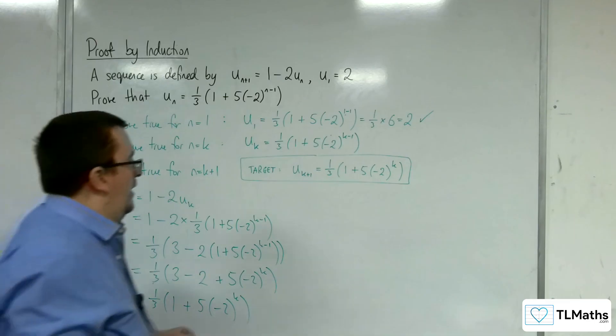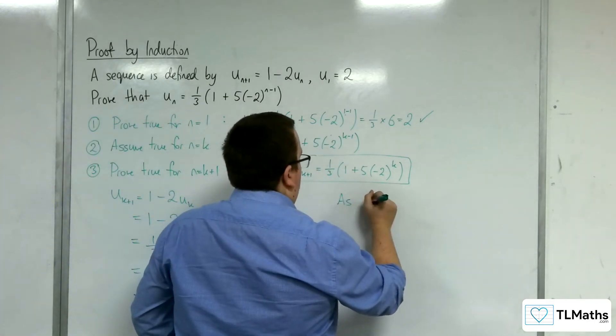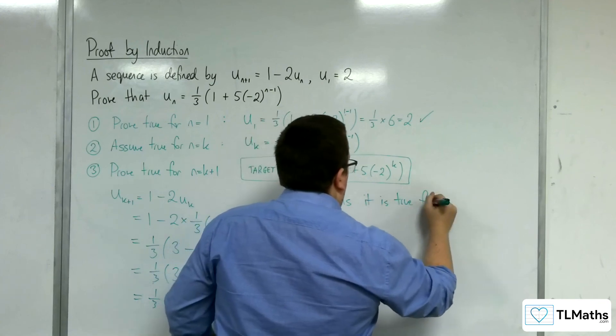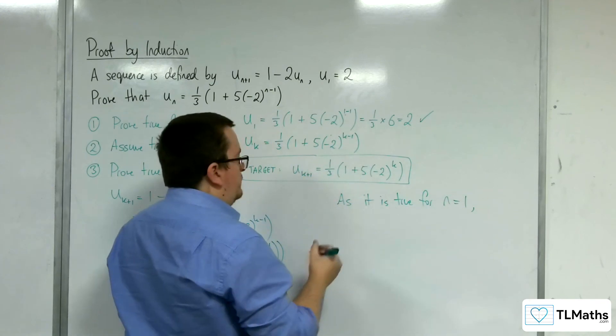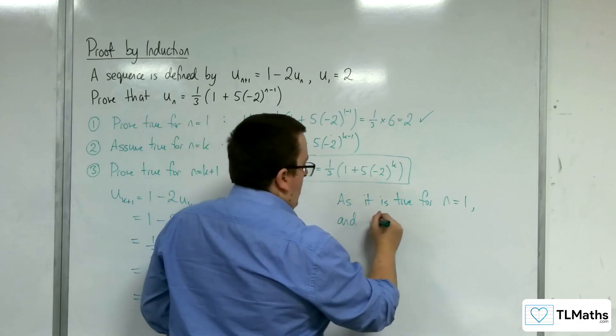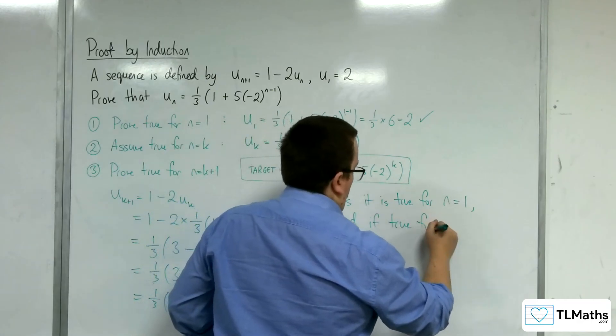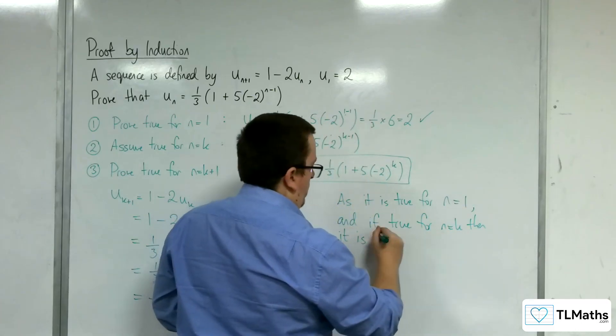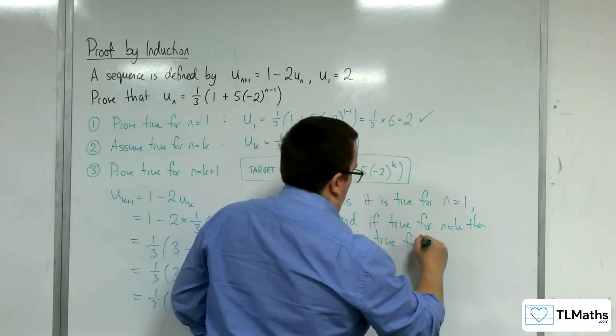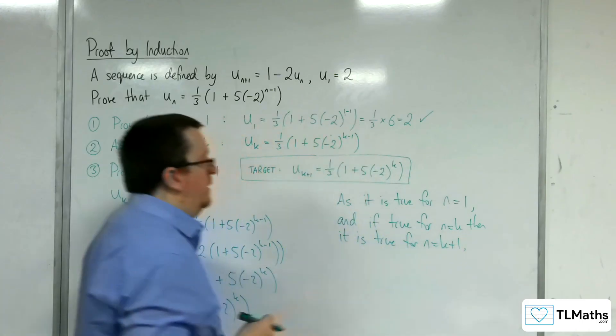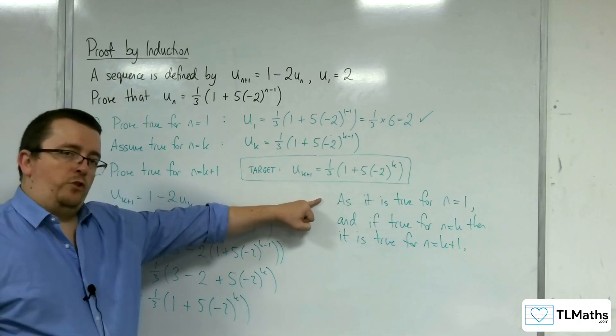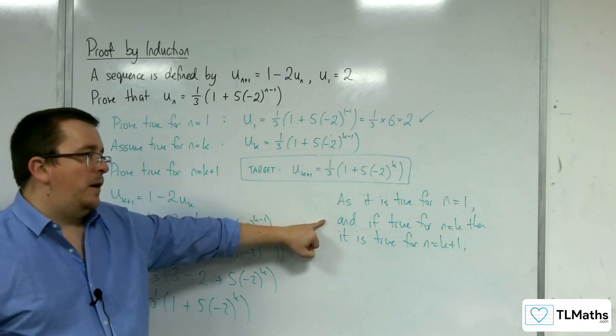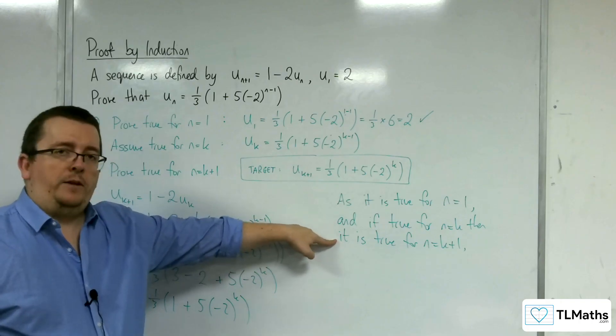So as it is true for n equals 1, and if true for n equals k, then it is true for n equals k plus 1. So we showed that it was true for n equals 1. We assumed it was true for n equals k, and we showed if that was true, then it's true for n equals k plus 1.